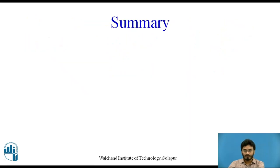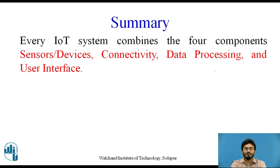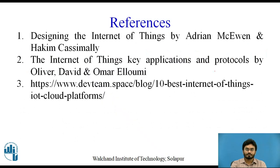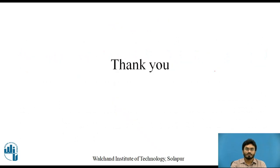As a summary, every IoT system combines the four basic components: sensors, connectivity, data processing, and user interface. What matters ultimately comes down to your specific application and organizational needs to choose the right connectivity component. Those are the available options for connecting your sensors to the internet. Here are the references used — thank you.